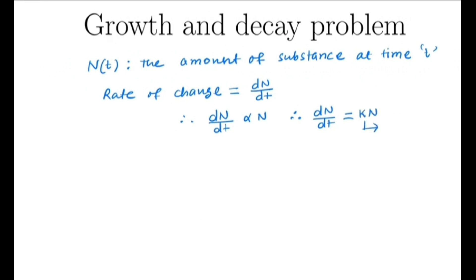We have dN/dt equals k times N. We denote this k as the growth or decay constant. So dN/dt equals kN, which gives us dN by N equals k dt. It is a separable differential equation.